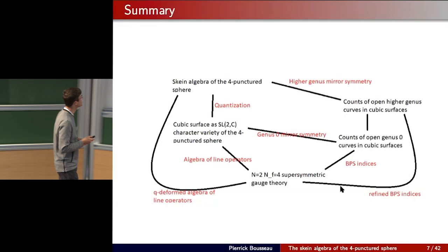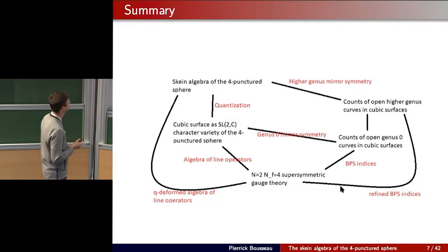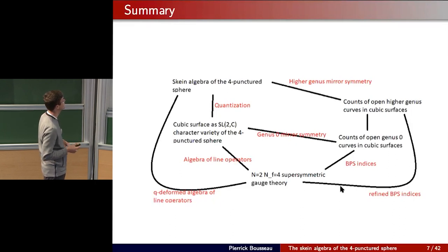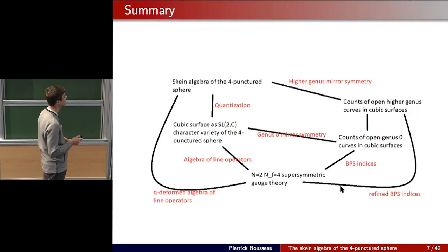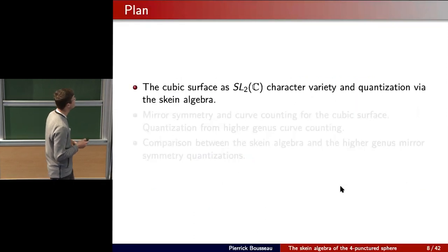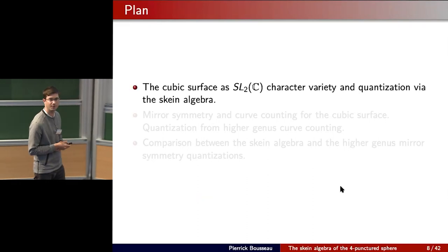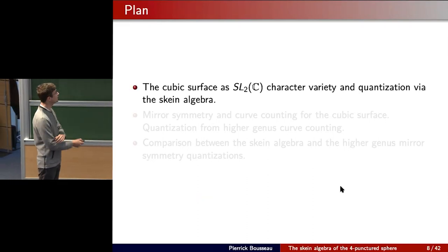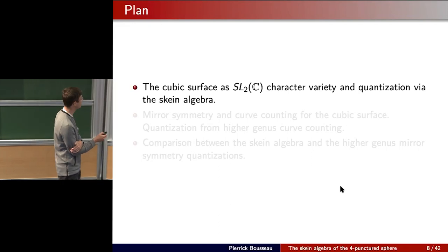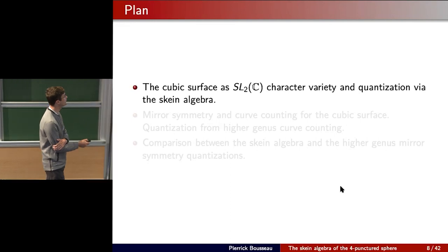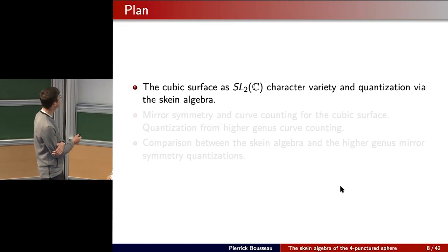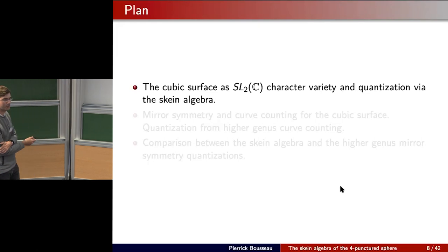Here is a summary diagram: on the right is enumerative geometry, on the left is low-dimensional topology, and at the bottom is physics. The plan is: first I will talk about the low-dimensional topology part, where the main character will be the cubic surface and an affine version appearing as the SL2C character variety, and then quantization given by three-dimensional topology via the skein algebra.